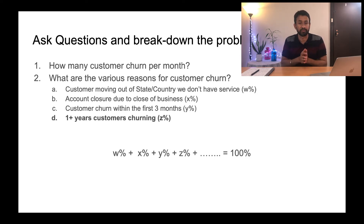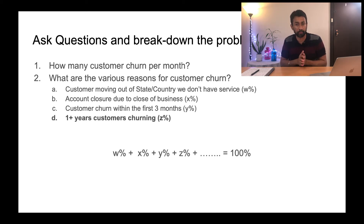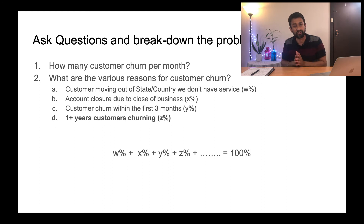The next category is customers who have churned within the first three months. These customers are churning out, but this problem is slightly different — they had an issue while onboarding. They haven't spent enough time on the platform; they just joined and immediately left. This is an onboarding problem which needs to be solved separately and should not be considered as part of churn. Churn should analyze customers who have been using the service for quite some time and have suddenly decided to move out. The final category is customers who have been using the service for one or more years and have suddenly decided to move to a different service provider — this is the customer base which needs to be properly analyzed.